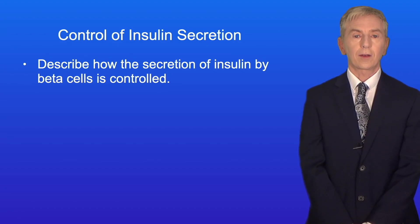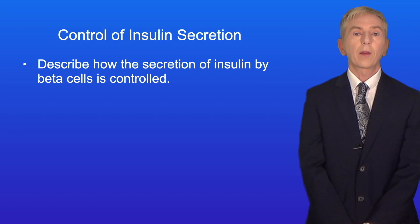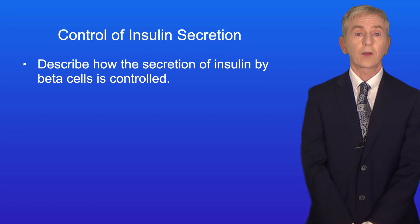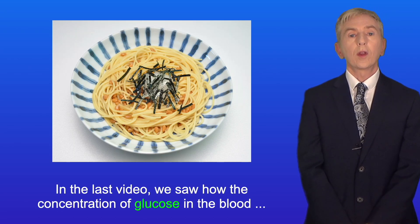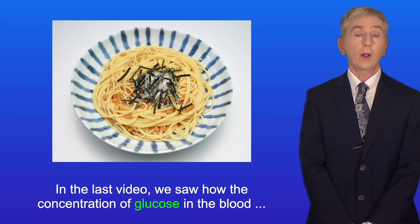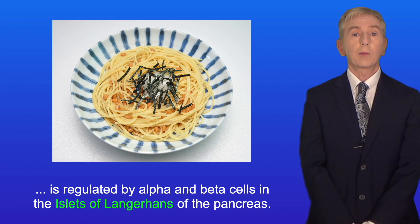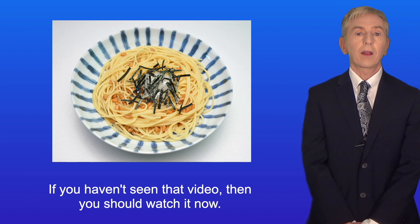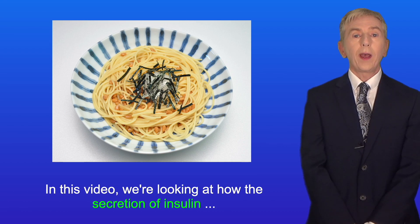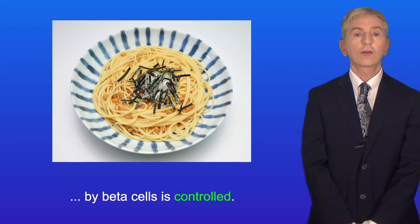Hi and welcome back to Free Science Lessons. By the end of this video you should be able to describe how the secretion of insulin by beta cells is controlled. In the last video we saw how the concentration of glucose in the blood is regulated by alpha and beta cells in the islets of Langerhans of the pancreas. In this video we're looking at how the secretion of insulin by beta cells is controlled.